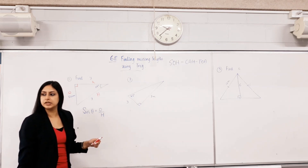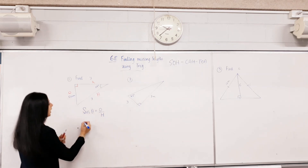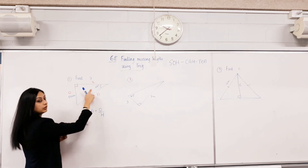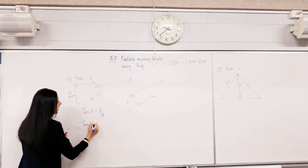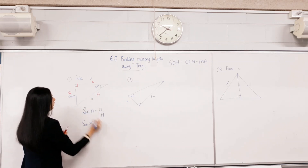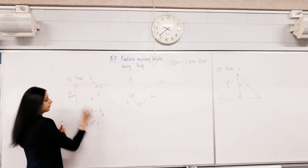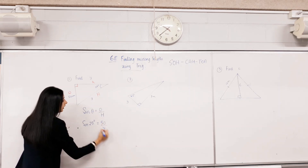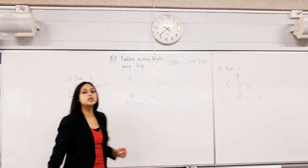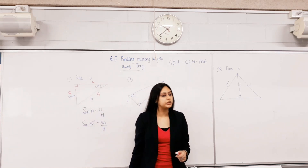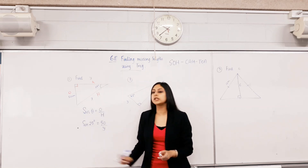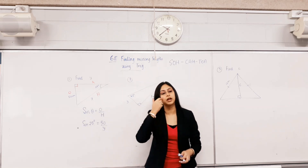Now sub in the numbers. Eyes on the board. Sine of 25 degrees equals 50 over y. Now, these questions are different from the last set of questions we did, because our unknown is in the denominator now.